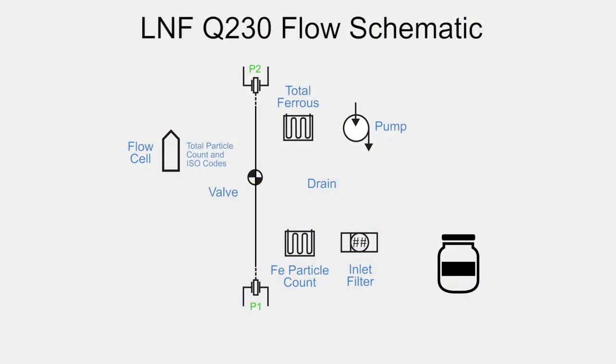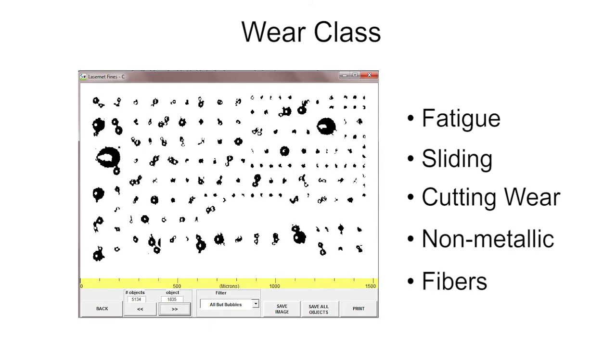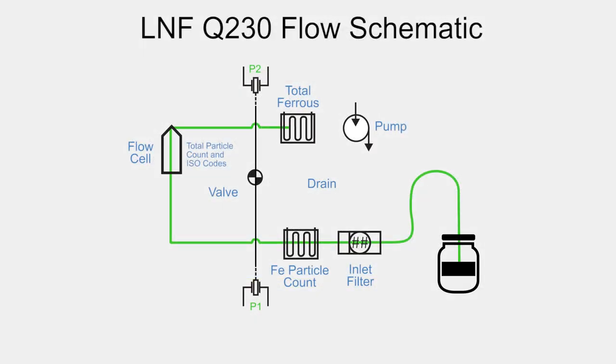The schematic here shows the flow path of the LNF. The sample is drawn up through the tube through a 100 micron filter that removes large particulates and enters the first portion of the ferrous monitor, a high-sensitivity magnetometer which measures the ferrous particle count. The sample then enters the LNF flow cell, which uses laser light and a CCD detector to image each individual particle. This provides particle count in ISO codes and also characterizes all particles greater than 25 microns into a wear class, either fatigue, sliding or cutting wear, non-metallic or fibers, based on the shape of the particles. Finally, the sample enters the second magnetometer, which measures total ferrous content in PPM.